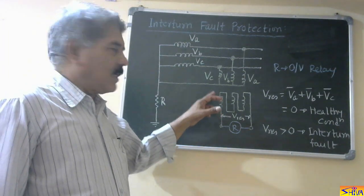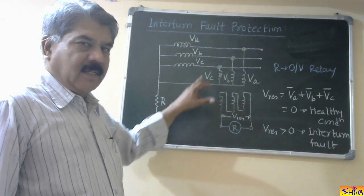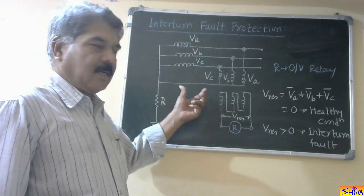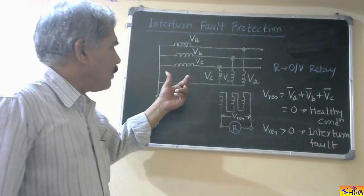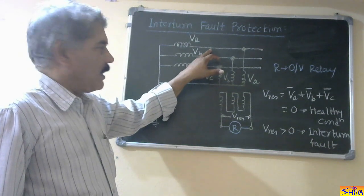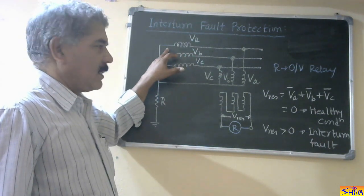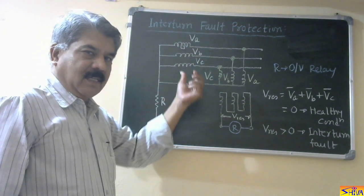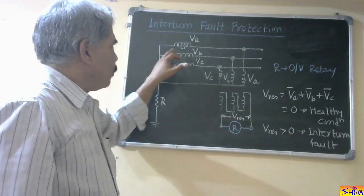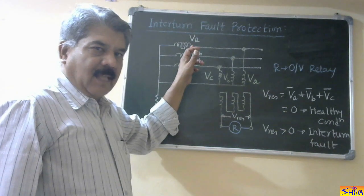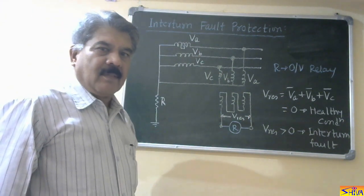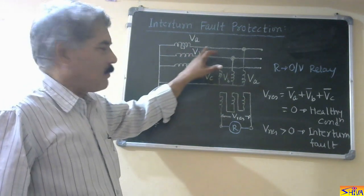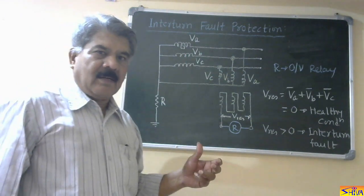When we use a percentage differential relay, one set of CTs is on this side and one set of CTs is on this side. When there is a phase-to-phase fault, the differential current flows and the relay trips. Now, in the case of an inter-turn fault, let us consider the A-phase winding. One CT is here, the second CT is here. Inter-turn fault means a few turns of the same winding — that is the phase-A winding — get short-circuited. So the induced EMF in that particular phase will reduce, and obviously the current will also reduce. But this reduced current will flow through both CTs on each side of the winding, so the differential current will be zero.